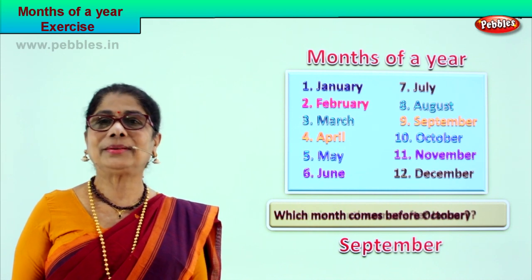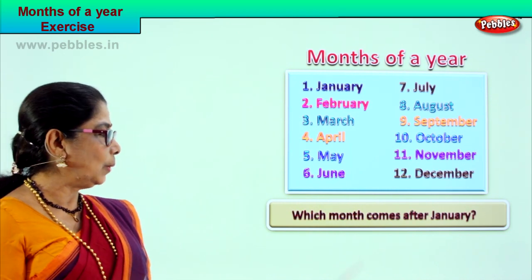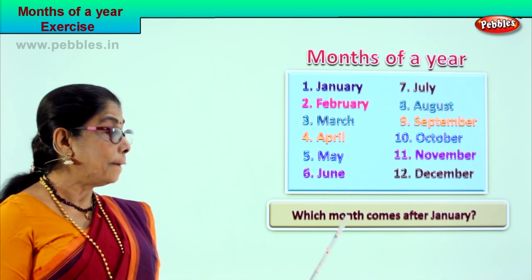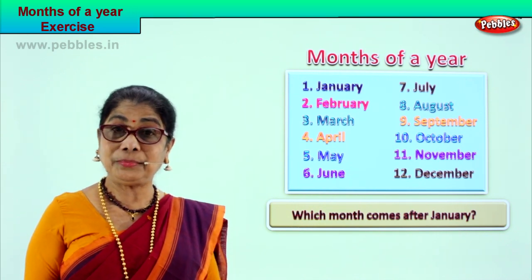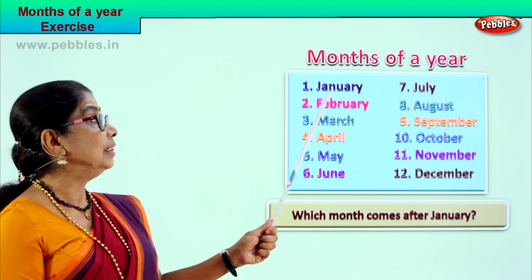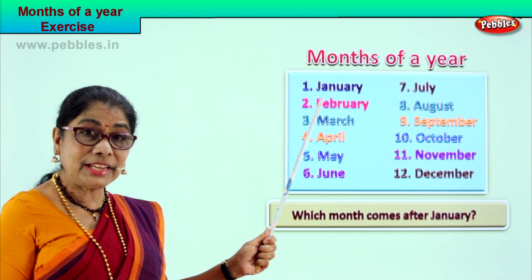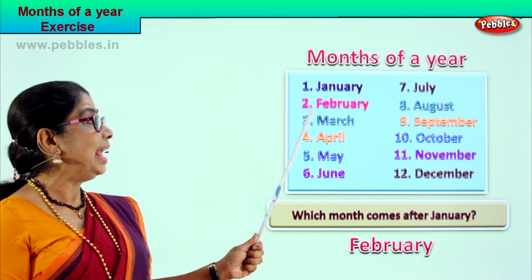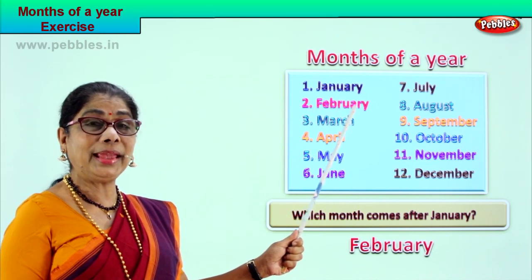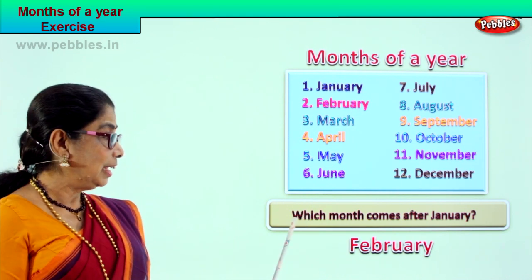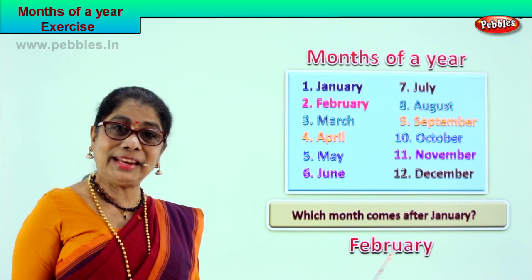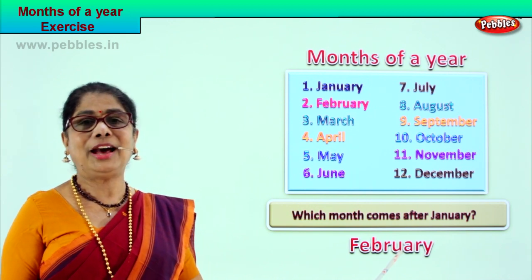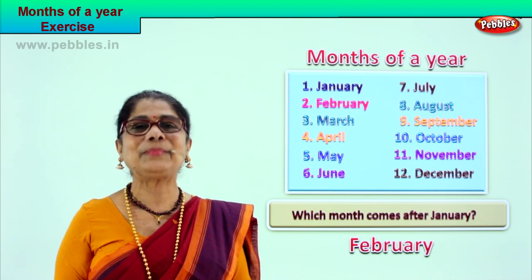Shall we take another question? Here we are. Read the question with me: Which month comes after January? Which is the first month of the year? January. Which month comes after January? February. After January comes February. Spell February: F-E-B-R-U-A-R-Y. Which month comes after January? February. Did you enjoy the exercise? Good.